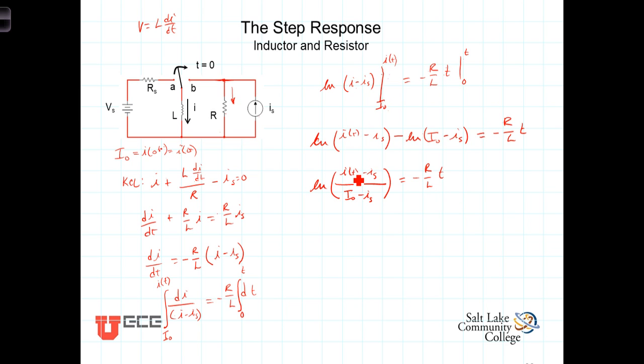Now again, we're trying to solve for this term here inside the log, as an argument of the log function, so we exponentiate both sides, and we get (I(t) minus Is) over (I naught minus Is), is equal to e to the negative R over L times t.